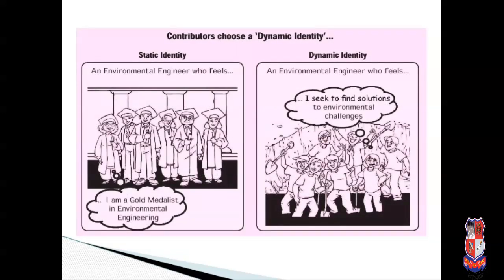Here we are taking one example of an environmental engineer — static and dynamic identity both. In case of static identity, an environmental engineer feels like 'I am a gold medalist in environmental engineering,' and so stops work, satisfied with what has been achieved. Whereas in case of dynamic identity, the engineer feels 'I seek to find solutions to environmental challenges — as a gold medalist, I must not stop; I have to find solutions for different problems.'